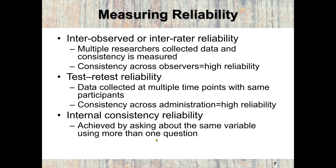There are three ways to measure reliability. First, inter-observer or inter-rater reliability — multiple researchers collect the data and consistency is measured. Consistency across observers should indicate very high reliability. Second, test-retest reliability — we collect the data at multiple time points with the same participants, and consistency across administrations gives us high reliability. Third, internal consistency reliability — achieved by measuring the same variable using more than one question.